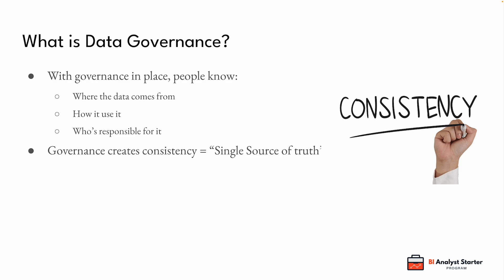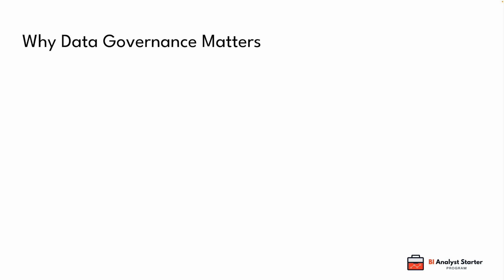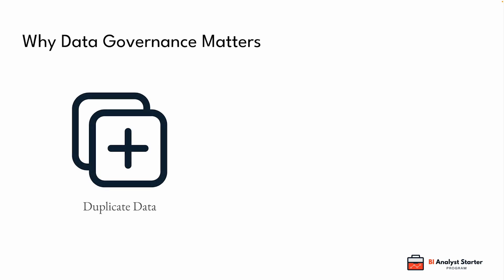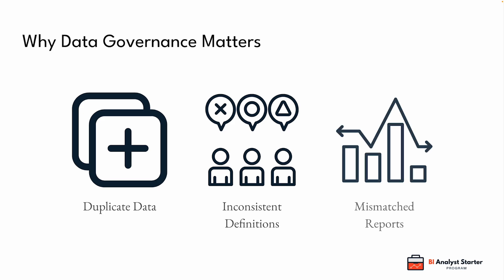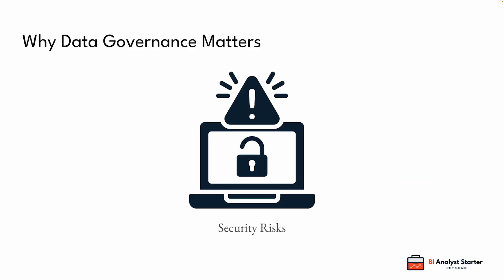It creates consistency, and that's where the idea of a single source of truth comes from. Instead of five teams using five different versions of the same data set, everyone agrees on what's official, what's clean, and what's trusted. Without data governance, things break down quickly. You get duplicate data, inconsistent definitions, and reports that don't match. Even worse, sensitive data might be exposed or misused. And when that happens, people stop trusting the data — they start relying on gut instinct again, or spend hours debating whether the numbers are right instead of actually making decisions.